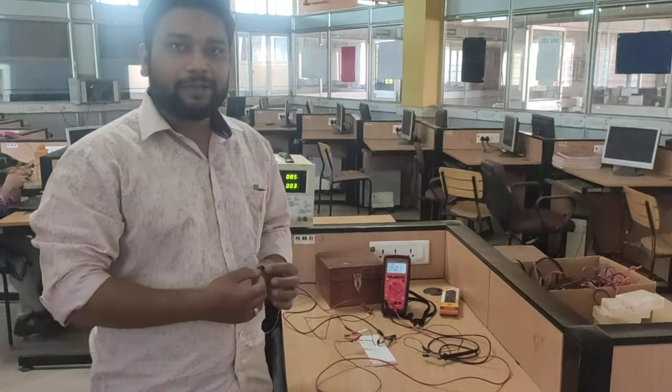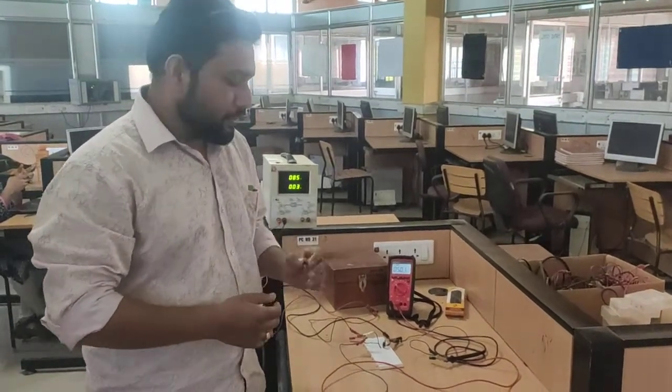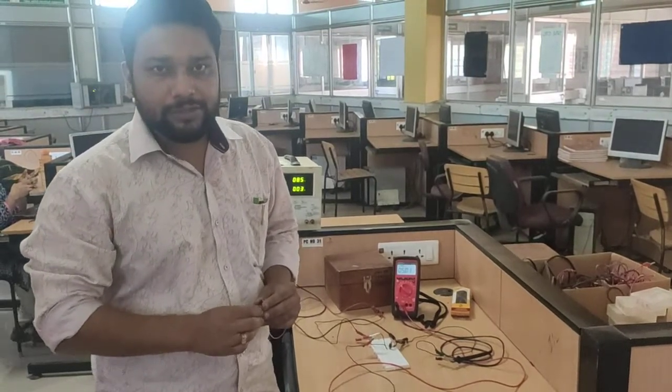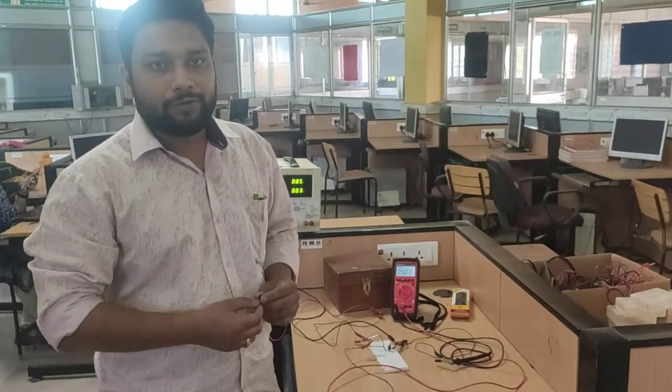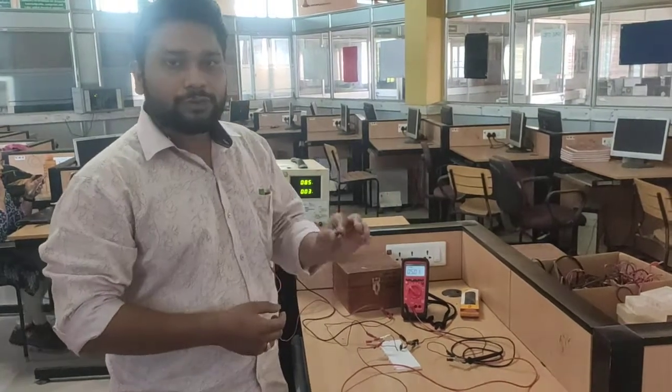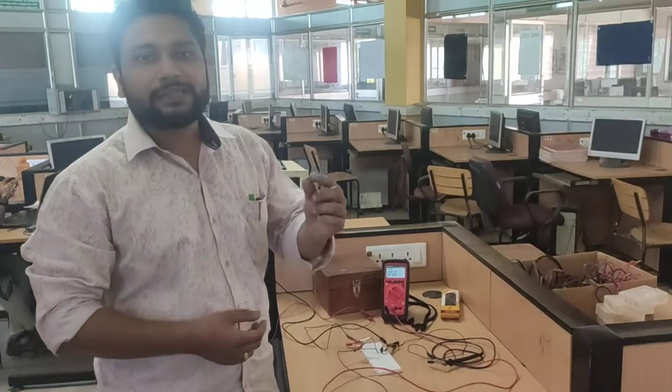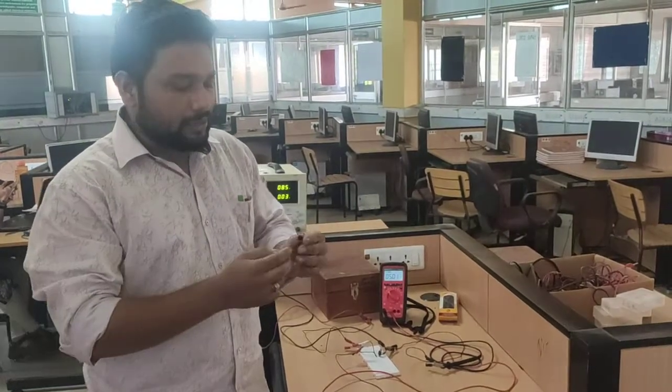So this is very easy practical we are going to analyze today. We are going to understand how the 7805 IC works and how we are going to get 5 volt output voltage at the output side of this IC.